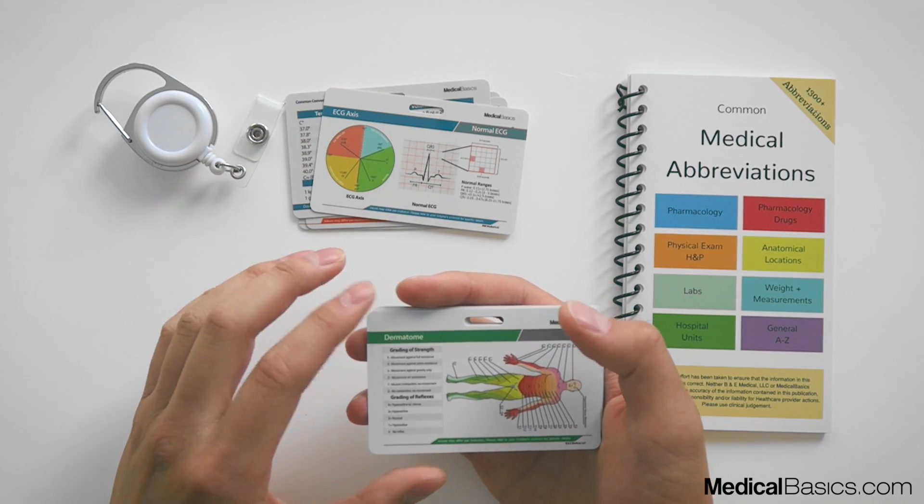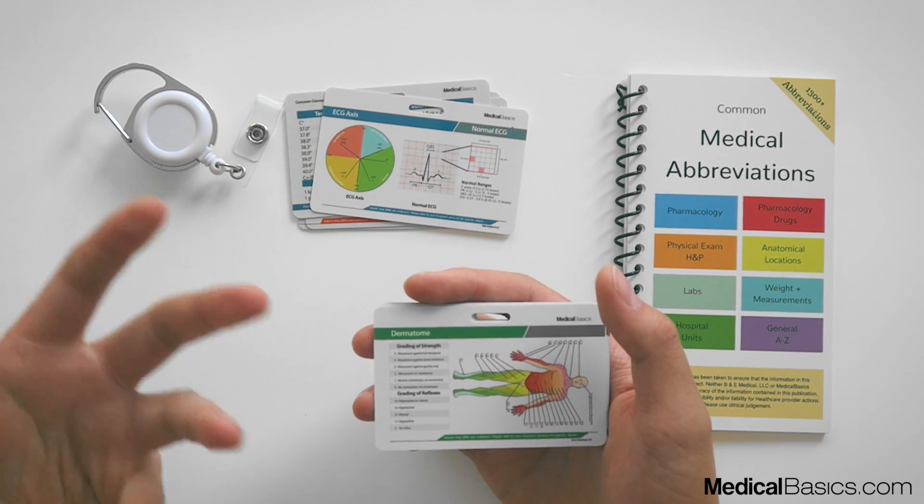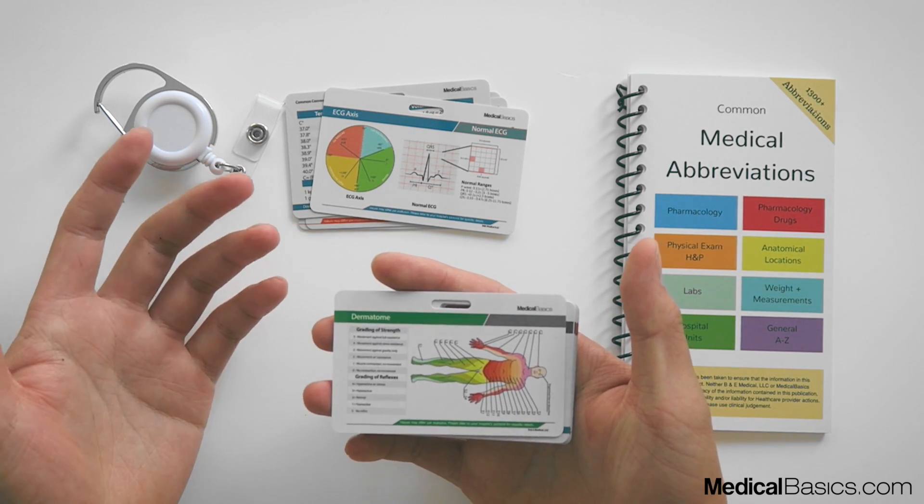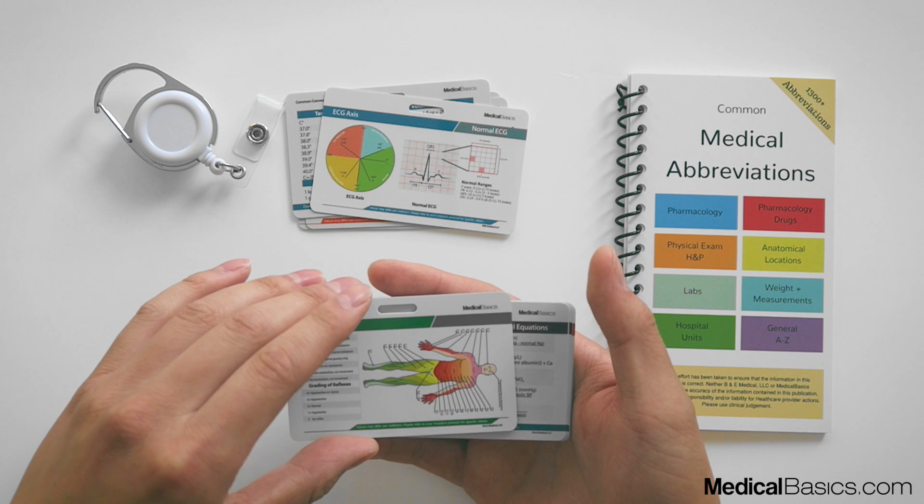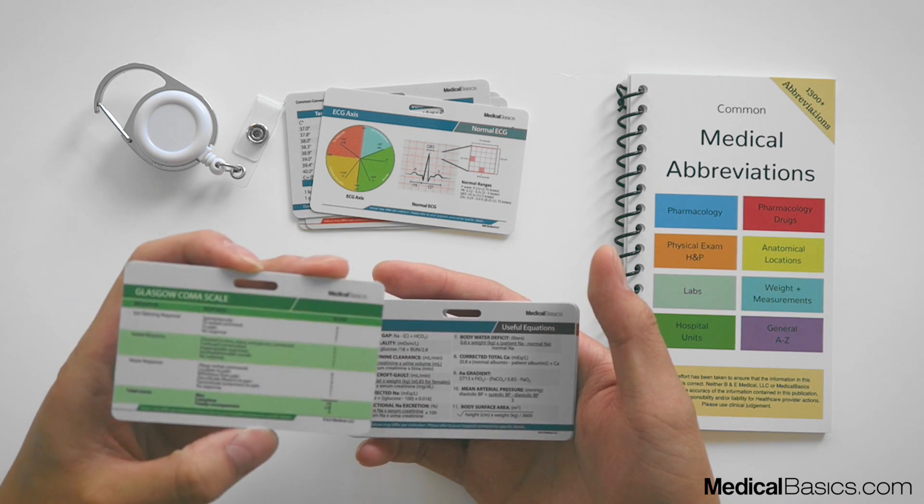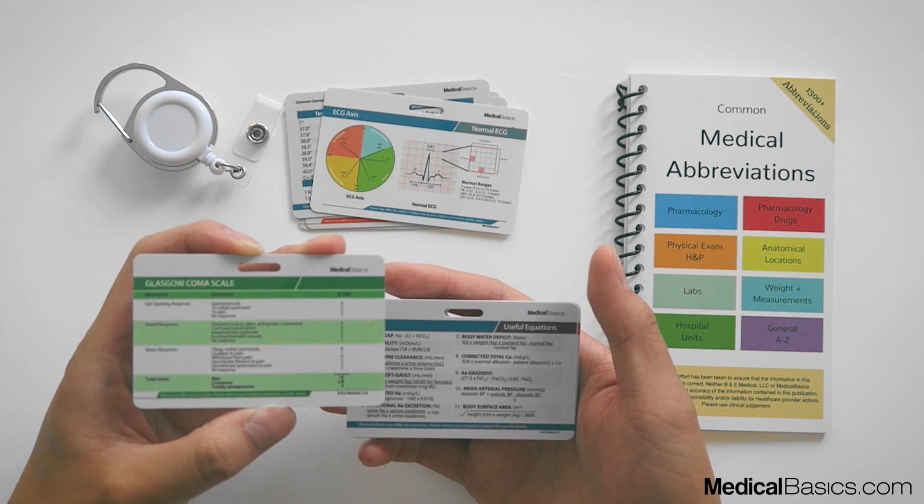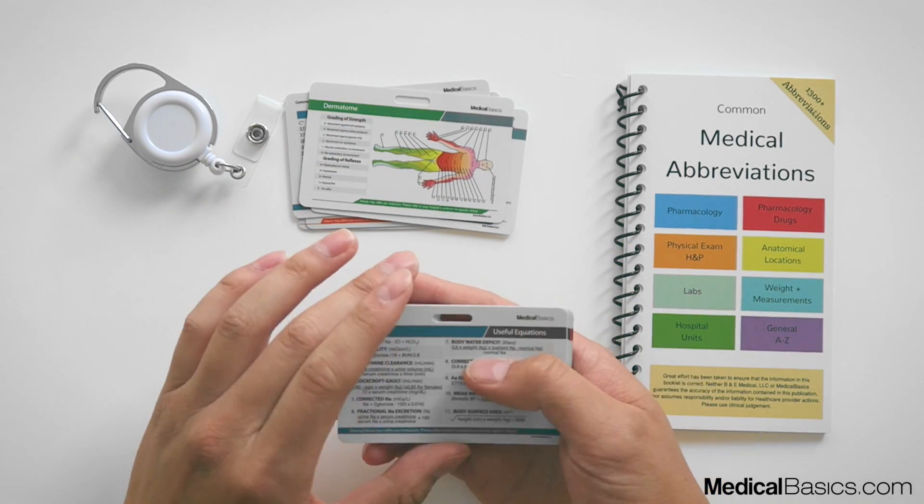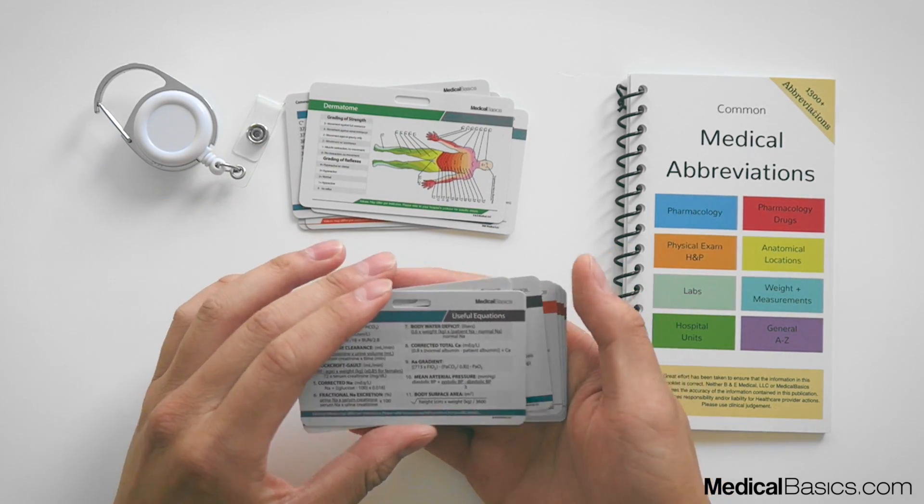Different types of dermatomes: where does C3, C4, what do all these things look like? Where are they in the different parts of the body? Some that I was oftentimes referencing when I was on my neurology rotation, as well as what are the aspects of a Glasgow Coma Scale? And different types of equations and things like that.